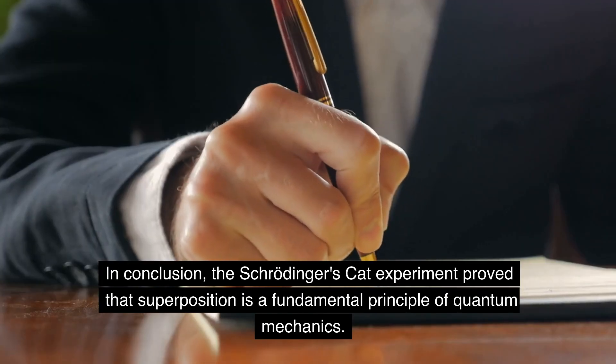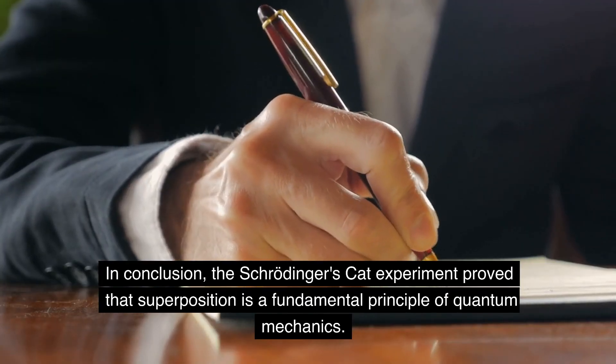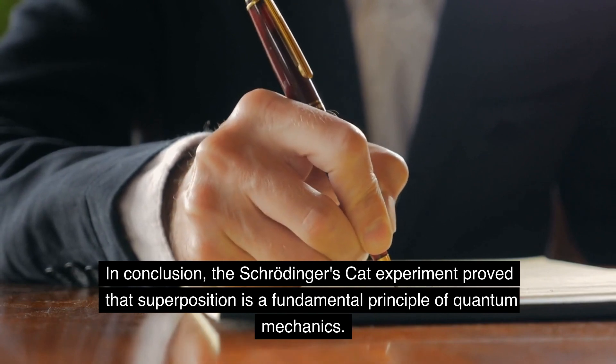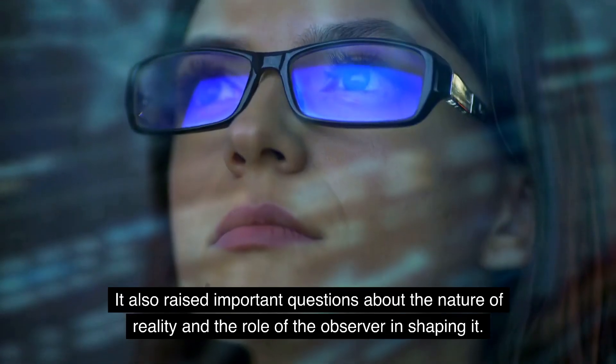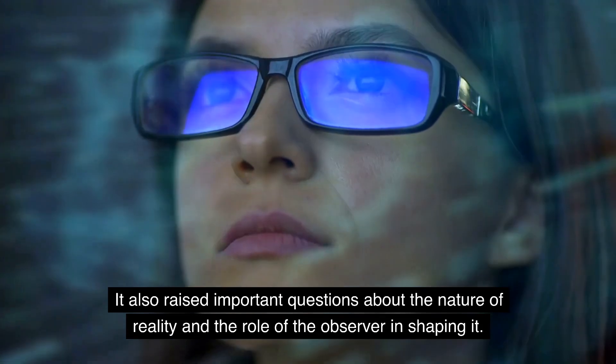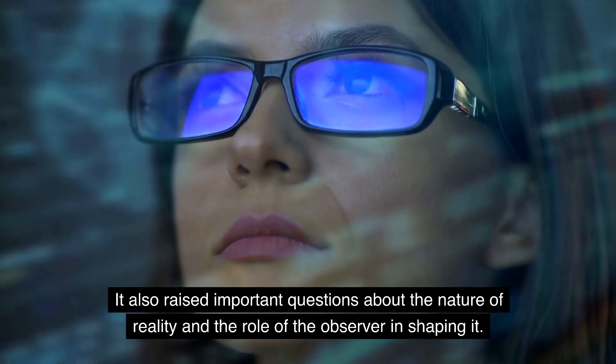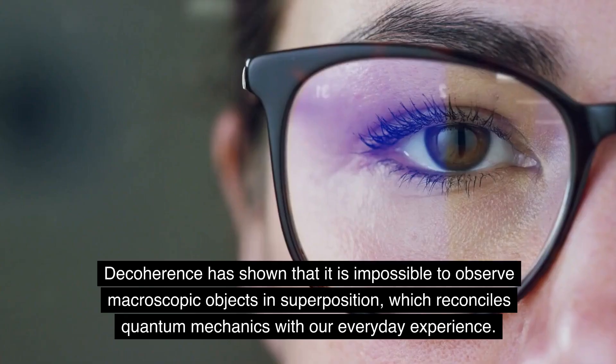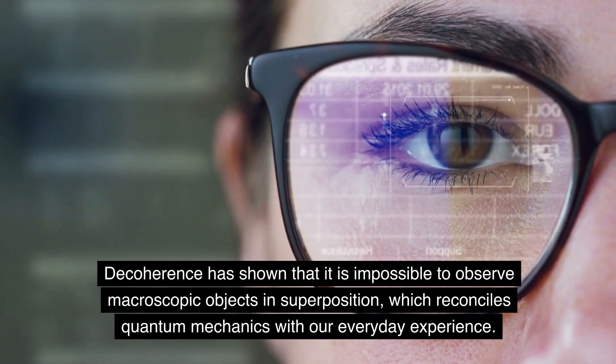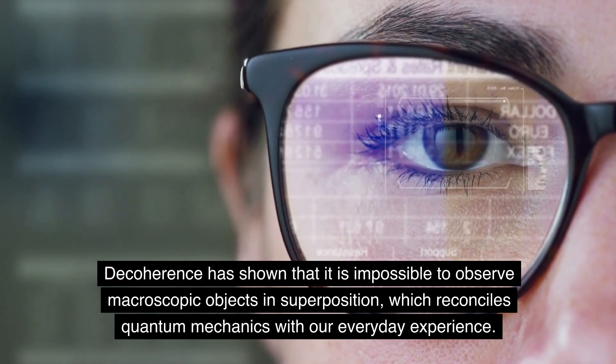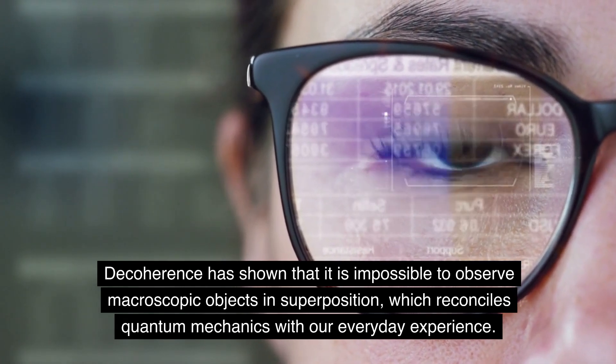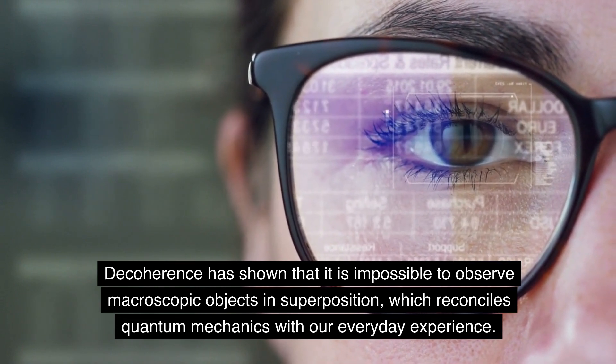In conclusion, the Schrödinger's CAT experiment proved that superposition is a fundamental principle of quantum mechanics. It also raised important questions about the nature of reality and the role of the observer in shaping it. Decoherence has shown that it is impossible to observe macroscopic objects in superposition, which reconciles quantum mechanics with our everyday experience.